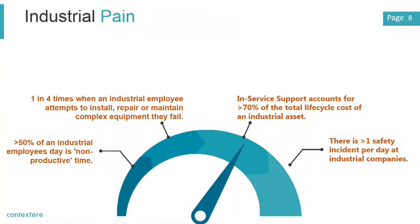On top of all of that, there are raw safety incidents. Imagine over one major safety incident a day — and that's a conservative number — causing either death or catastrophic harm. All things that can be heavily impacted by people having more information, the right information, available to them where they need it.